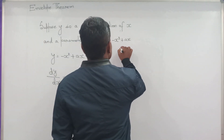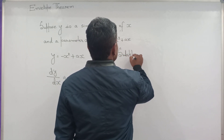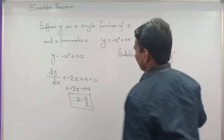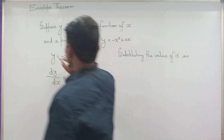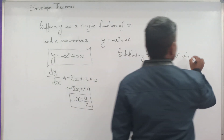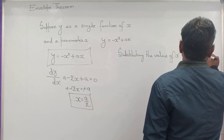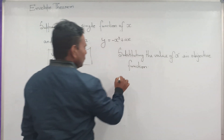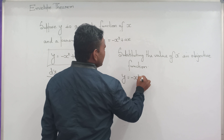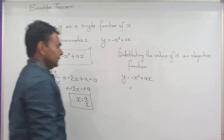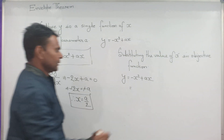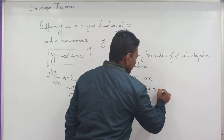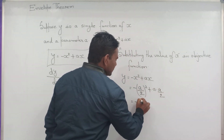Now substitute this value. Substituting the value of x into the objective function: y equals minus x squared plus ax, and what we got for x is a/2. So substituting: minus (a/2) squared plus a times (a/2), which gives minus a squared over 4, plus a squared over 2.